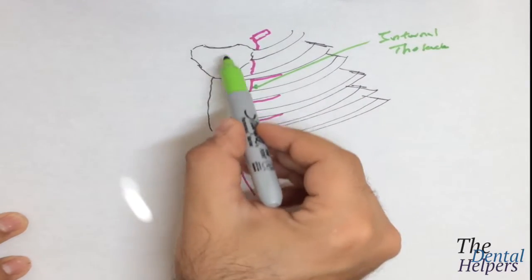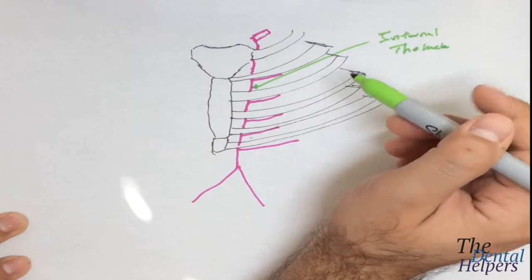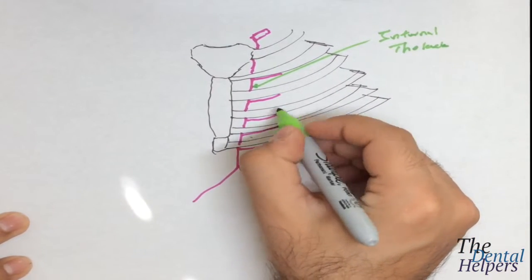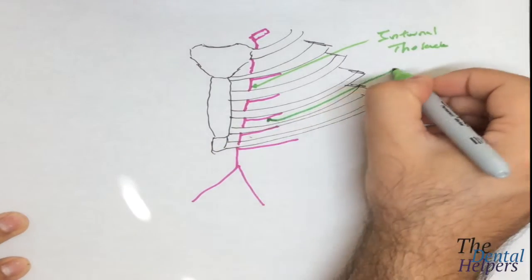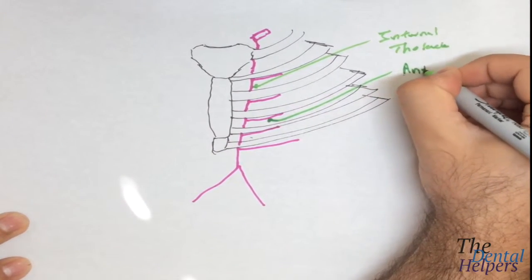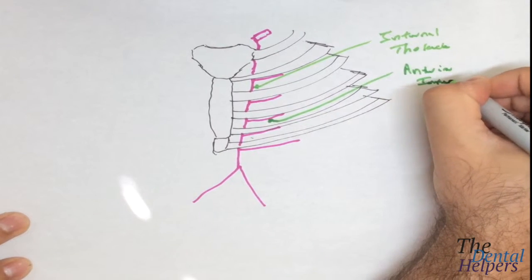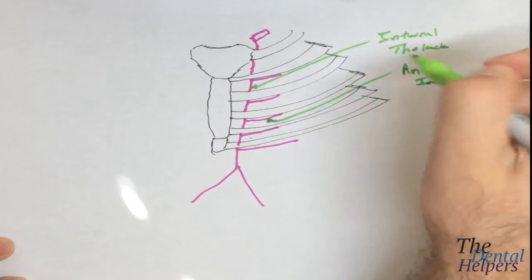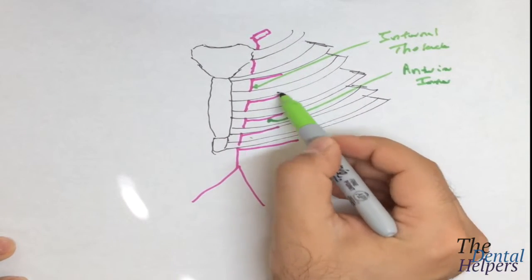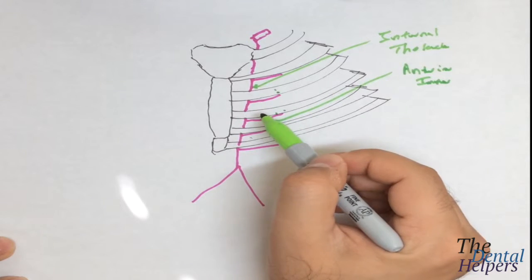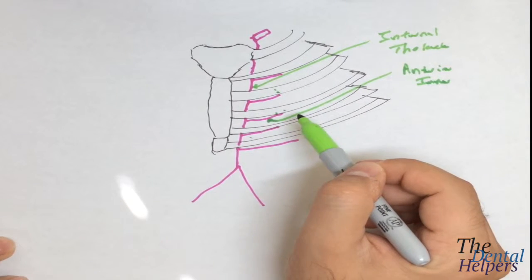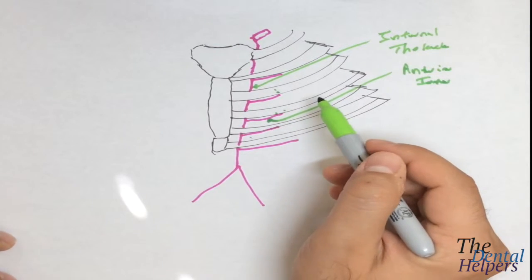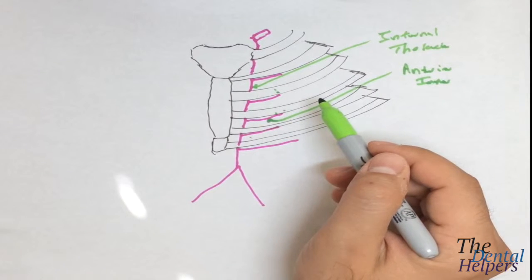So if we look at the clavicle, the anterior intercostal is going to be somewhere around here — these branchings that we see. Intercostal means the space between the two ribs, so they run between the two ribs and then finally anastomose, meaning they meet other veins and arteries and allow for the dispersal of blood into the muscle tissues.